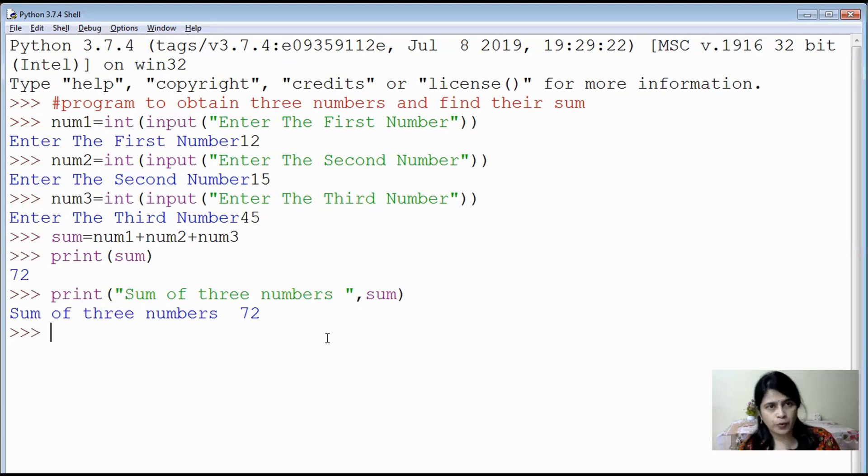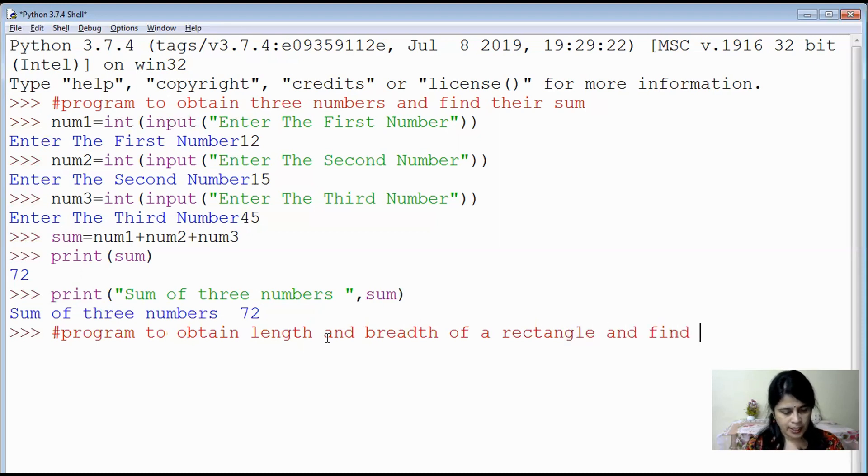I also like to show another program, very simple program. I think now you all will be able to write programs yourself. So let us try a program to obtain length and breadth of a rectangle and find its area. That is the program. Now, yes, you are right. What you'll have to do? You'll have to take the input. What input should be given so that you can find out the area of a rectangle? Of course, it should be length and breadth.